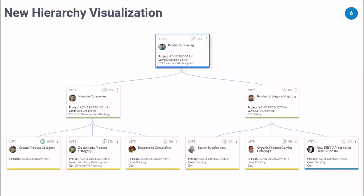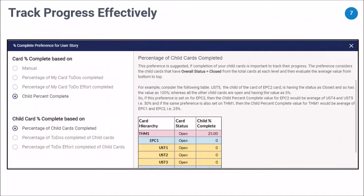How is work progress computed? We have introduced a whole set of preferences that allow you to set them for individual work item types. For a theme, you would like progress based on the number of cards or epics completed under it. For a user story, you would want percent progress based on the number of to-dos completed or hours remaining. These are the ways progress can get computed automatically on different types of cards — be it theme, epic, user stories, or technical stories.